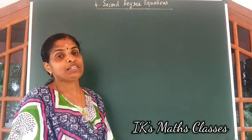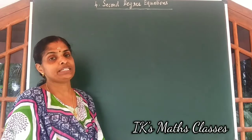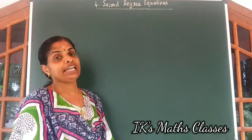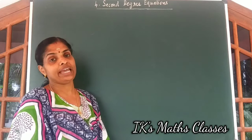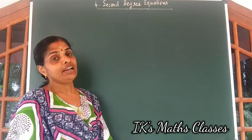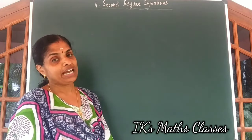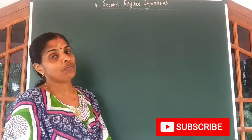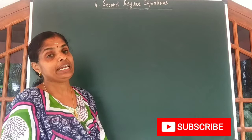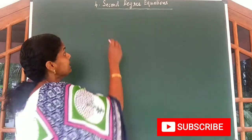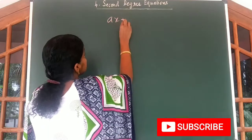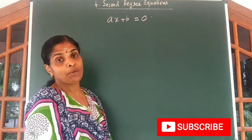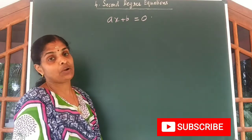Hi children, welcome to the 4th chapter: 2nd degree equations. You have studied about equations in 8th standard. They are simple equations, that is equations involving one variable of degree 1. We studied about AX plus B equal to 0. This is the general form of a first degree equation.